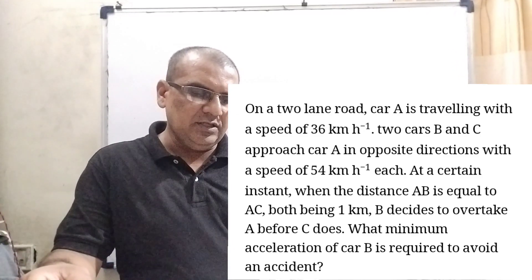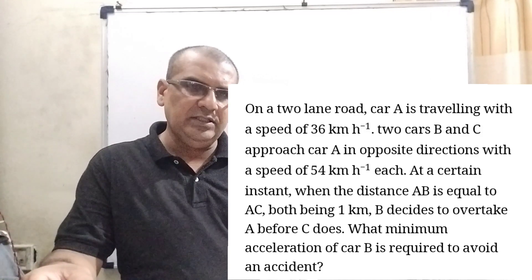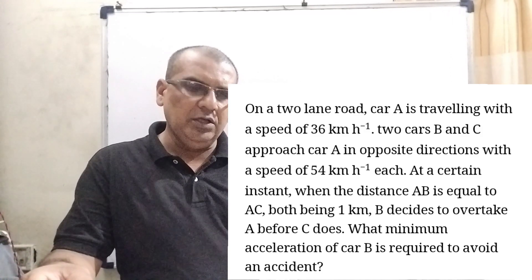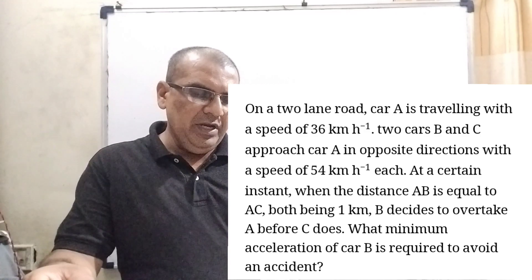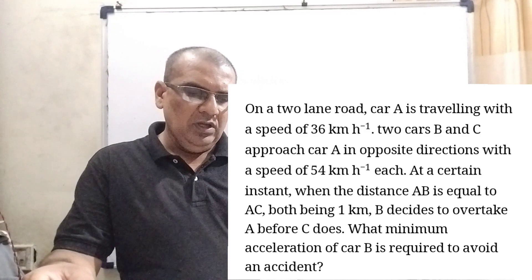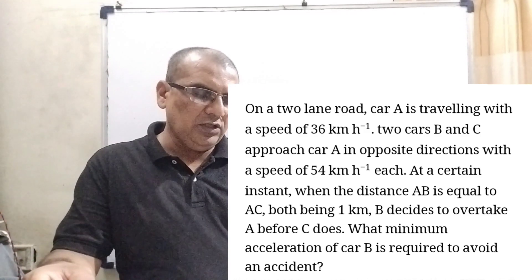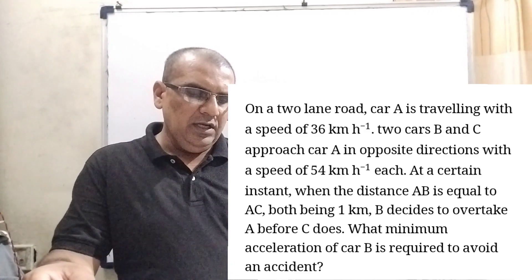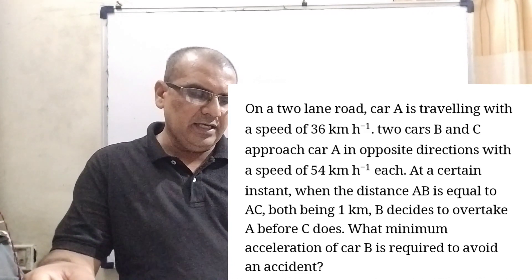At a certain instant, when the distance AB is equal to AC, both being 1 km, B decides to overtake A before C does. What minimum acceleration of car B is required to avoid an accident?